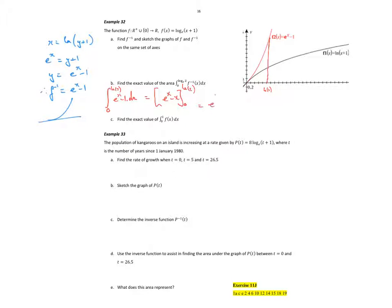Which is equal to e to the natural log of 2 minus natural log of 2, minus e to the 0 minus 0. Now e to the natural log 2 — e and log base e are inverses — so that just equals 2, minus natural log of 2, minus 1. So we just get 1 minus natural log of 2. That's that area there.